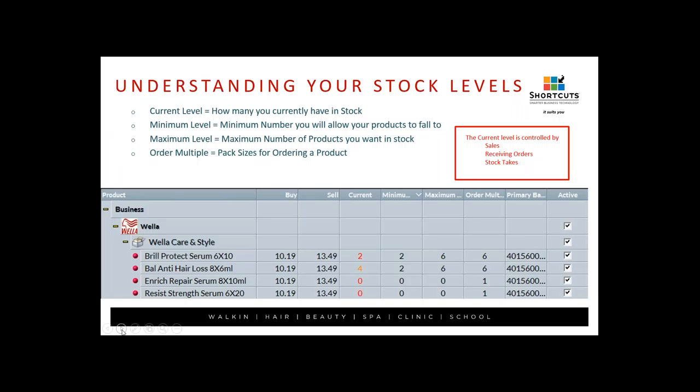Now let's look at stock levels. Once columns are in order, the main ones to focus on are: Current Level — how many you currently have in stock, controlled by sales, receiving orders, and stock takes. Minimum Level — the minimum number you'll allow products to fall to on the shelf; once they hit below that, Shortcuts triggers ordering. Maximum Level — the maximum number of products you want in stock; Shortcuts works between minimum and maximum to get you back to your required stock level.